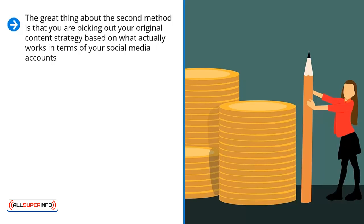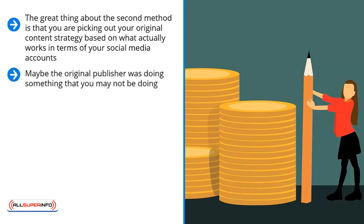You have to understand that even though high-quality third-party content may have a lot of objective social signals, those signals may have been generated in different contexts. Maybe the original publisher was doing something that you may not be doing. You can definitely do the first method if you're in a hurry, but if you have some time to spare, you might want to try the second method.